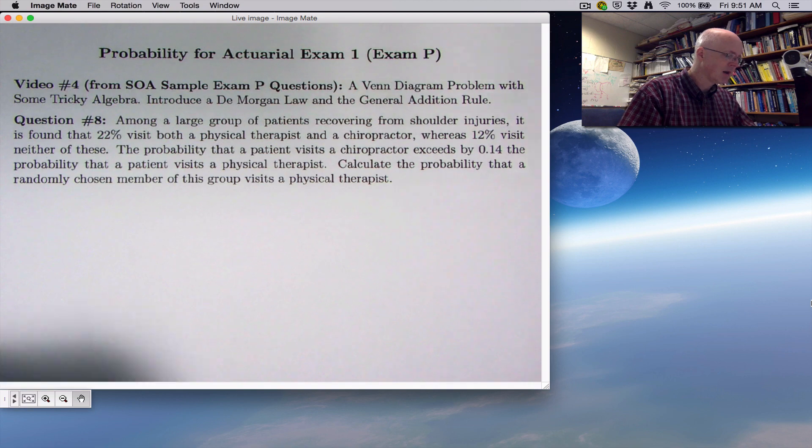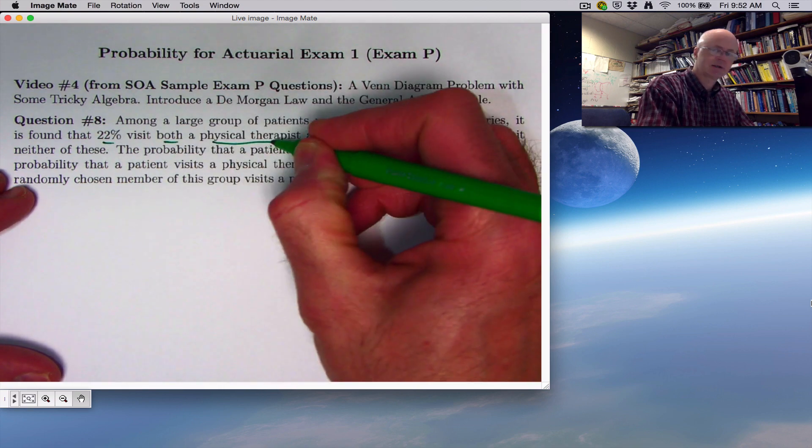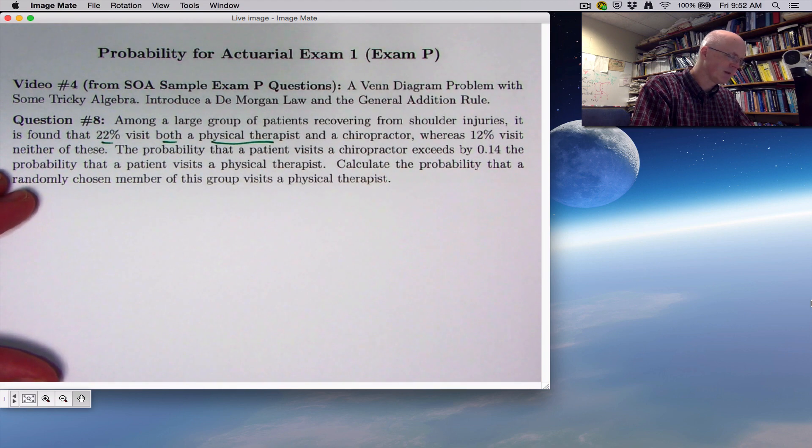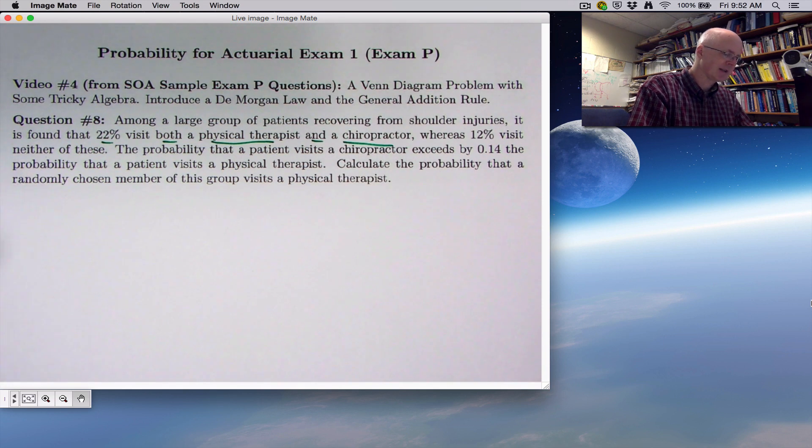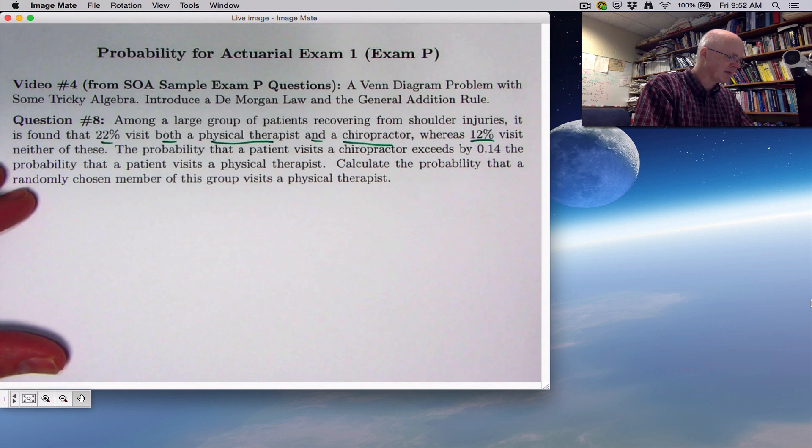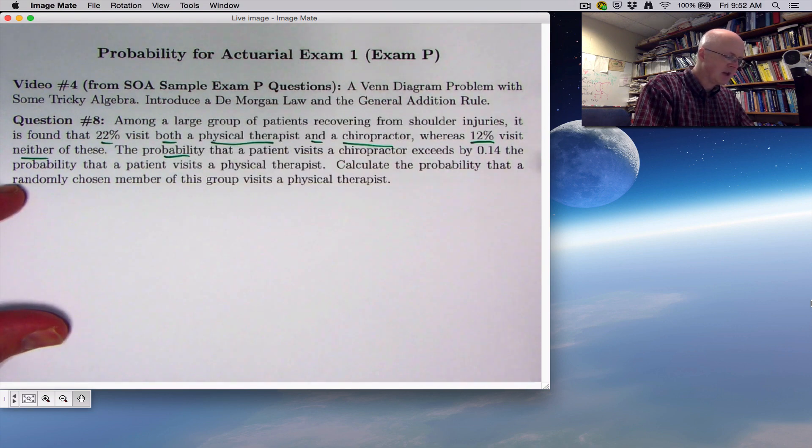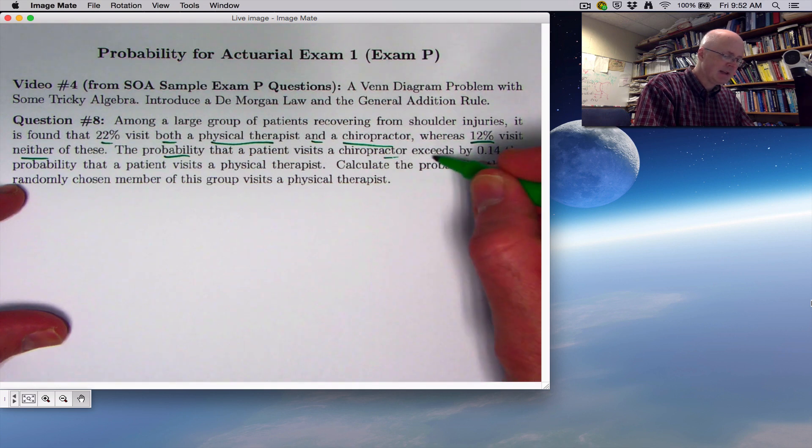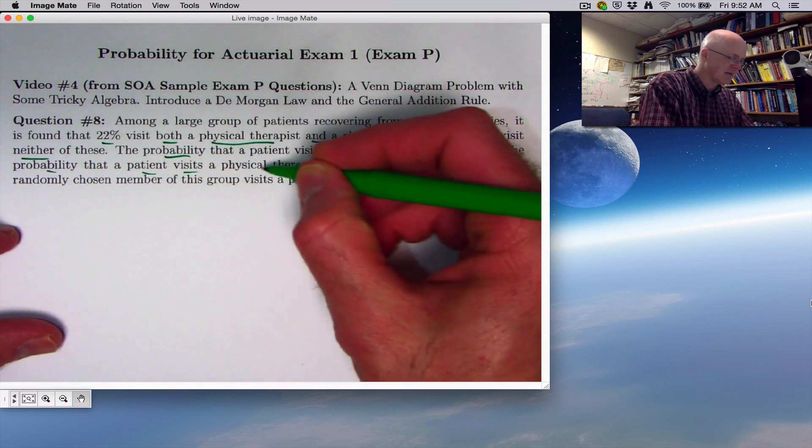Here's the question. Among a large group of patients recovering from shoulder injuries, it is found that 22% visit both a physical therapist, PT for short (though I'm going to call it just T), and a chiropractor, I'll call that C. Whereas 12% visit neither of these.